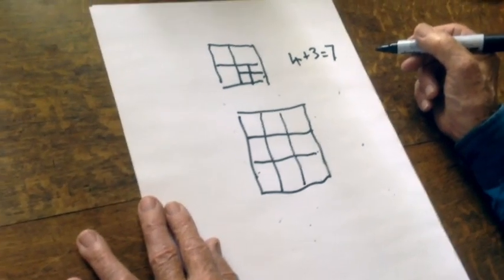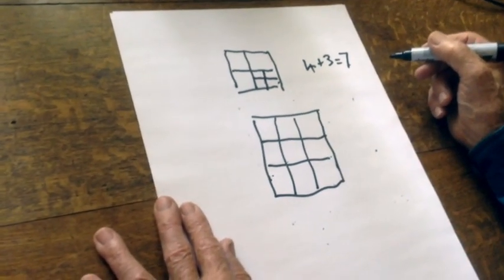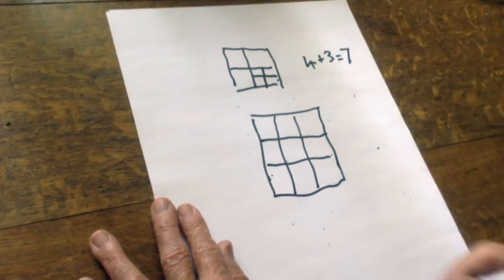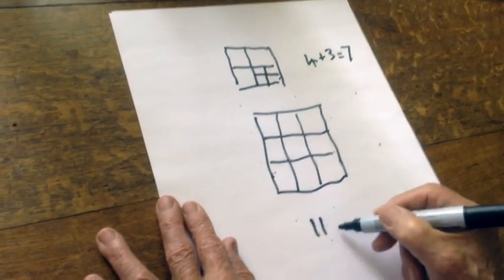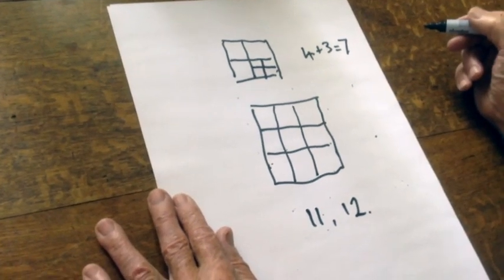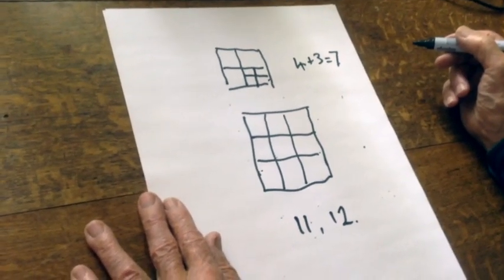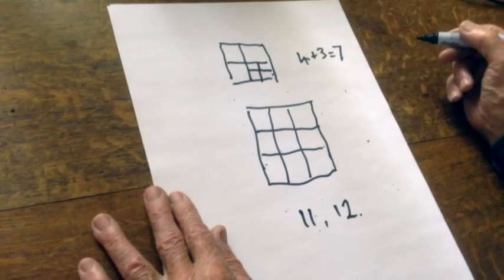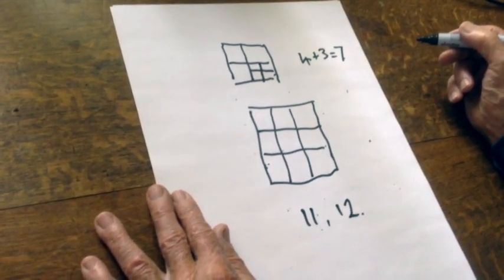So the challenge to start with is can you divide a square into, let's say, eleven squares or twelve squares. And then you might want to move on and see what other numbers of smaller squares you could divide squares into.